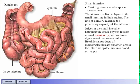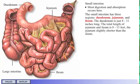Breakdown products of macromolecules are absorbed across the intestinal epithelium into blood or lymph. The small intestine has three regions: duodenum, jejunum, and ileum. The duodenum is just 8 to 11 inches long. The total length of jejunum and ileum is 8 to 13 feet, with the jejunum slightly shorter than the ileum.